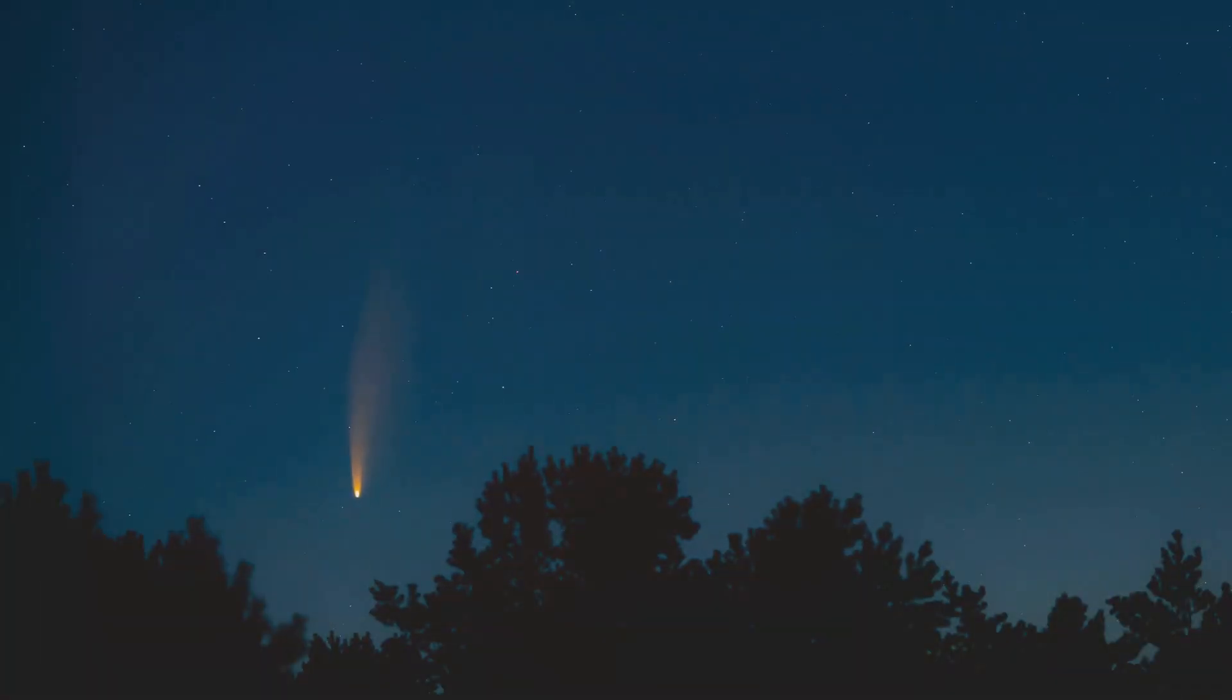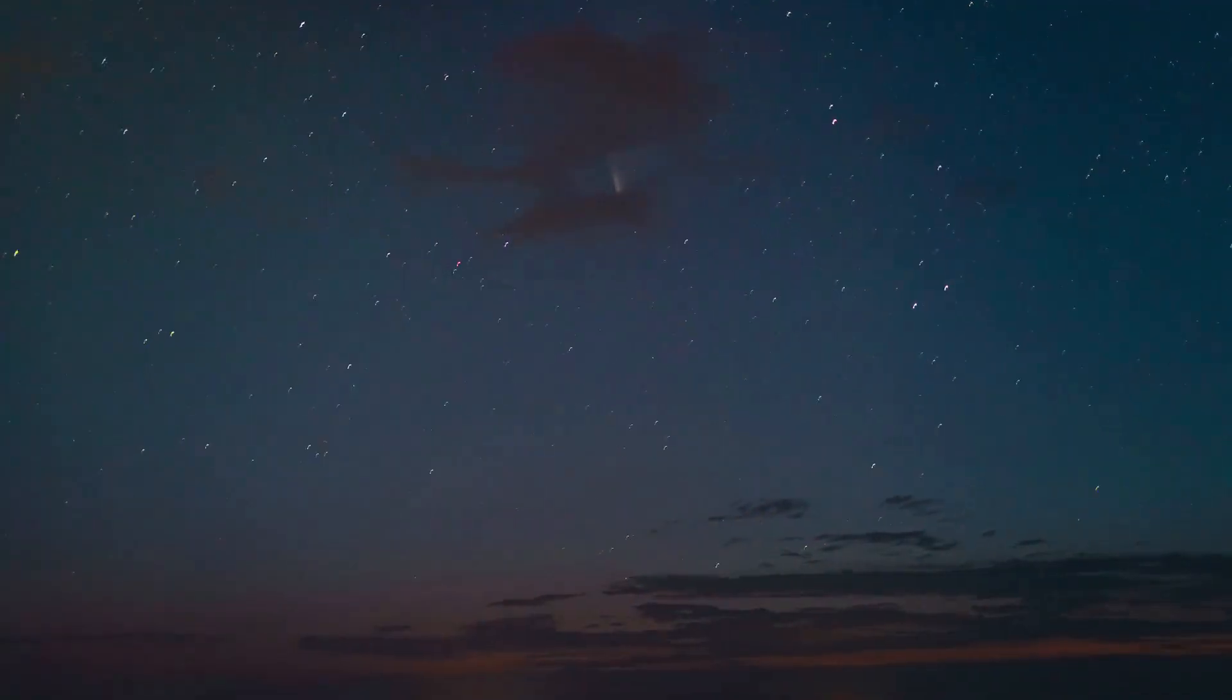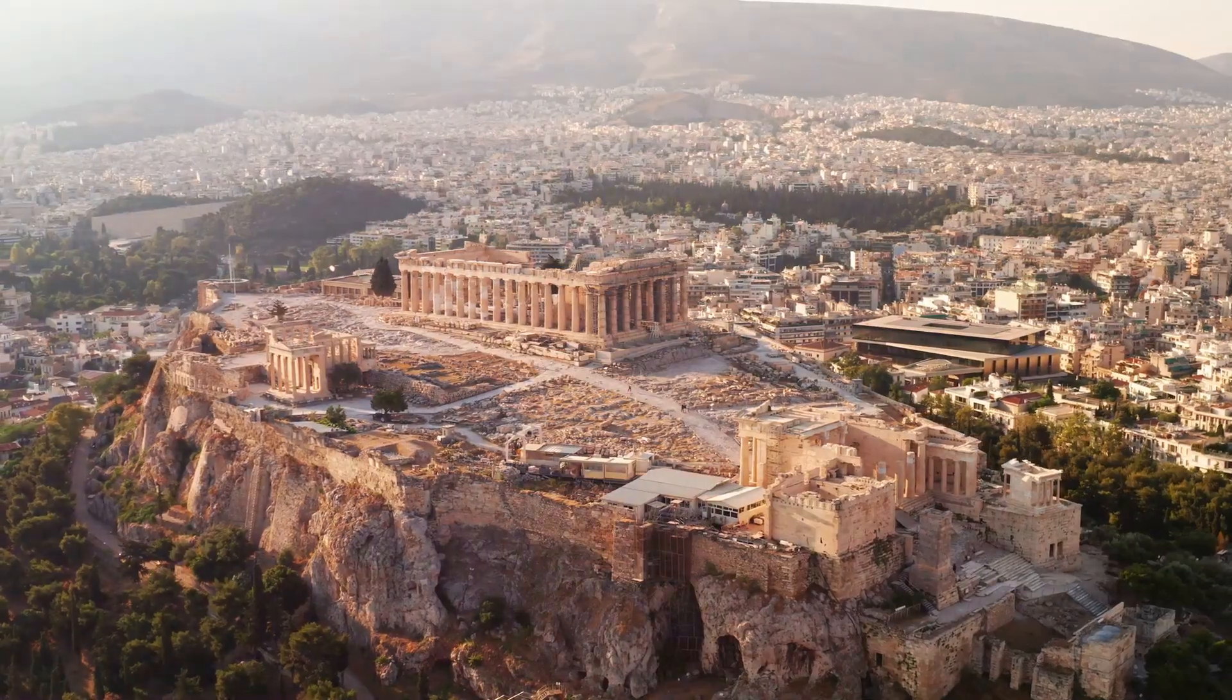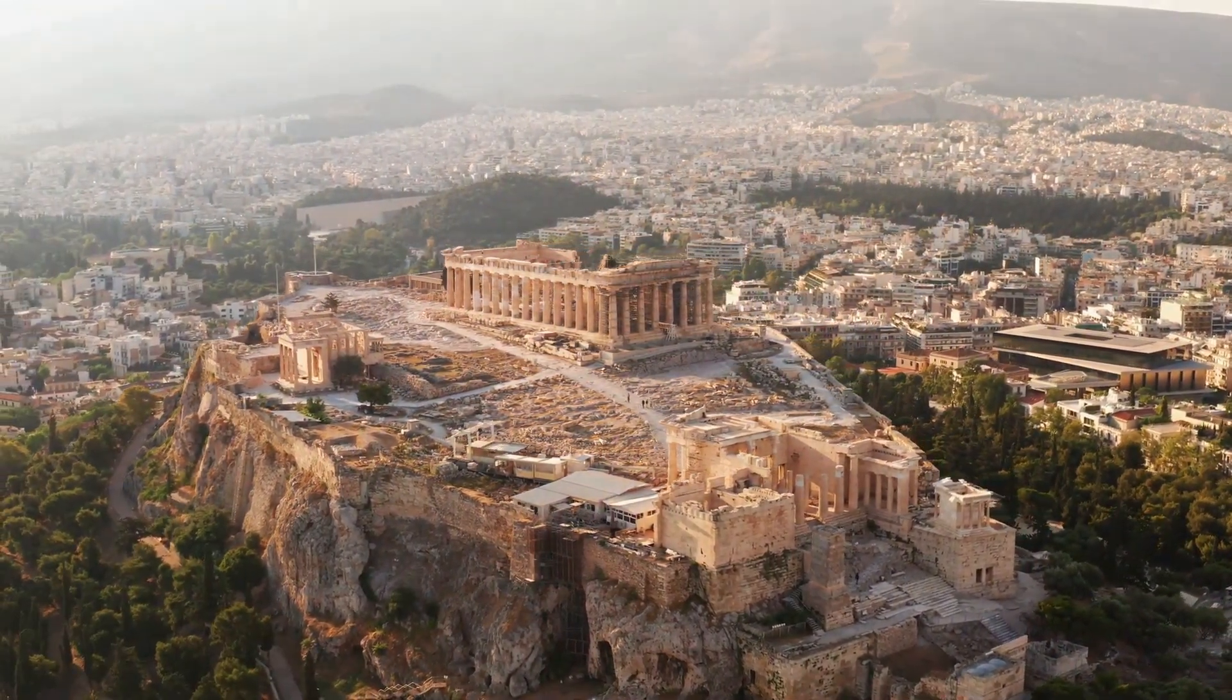One famous example is comet Hale-Bopp, which graced our skies in 1997 with its brilliant display. Hale-Bopp has an orbital period of about 2,533 years, meaning it last visited the inner solar system around the time of the ancient Greeks.